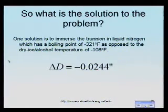The reason why we said this is a better alternative than using dry ice and alcohol mixture is because the boiling temperature of liquid nitrogen is minus 321 degrees Fahrenheit, as opposed to dry ice and alcohol mixture, which is at a temperature of minus 108. So that will give us more contraction in the diameter.